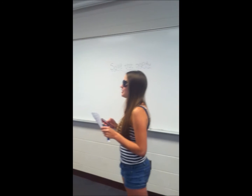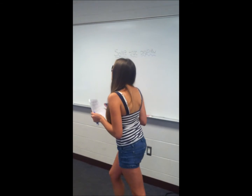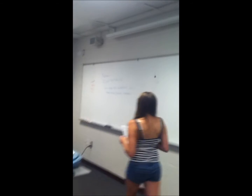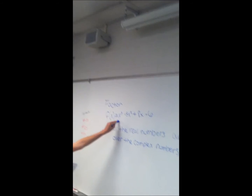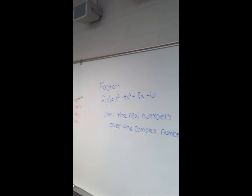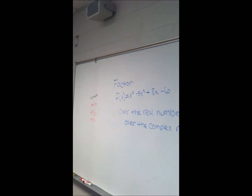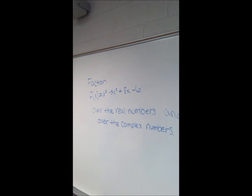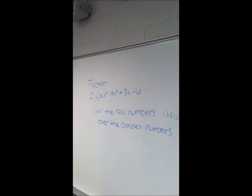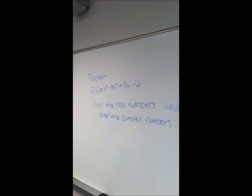Alright, so your problem today is f of x equals x to the third minus 5x squared plus 8x minus 6. You need to factor that and find the real numbers over the complex numbers. Ready? Begin.